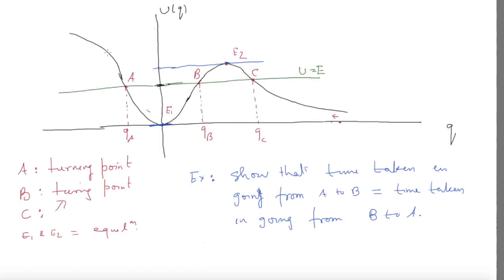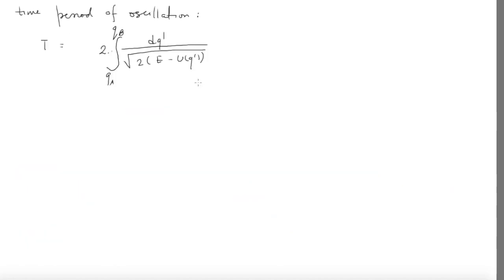How far the system climbs depends on the total energy given — whether it reaches only here or further depends on the energy. So QA and QB are basically functions of the total energy E.